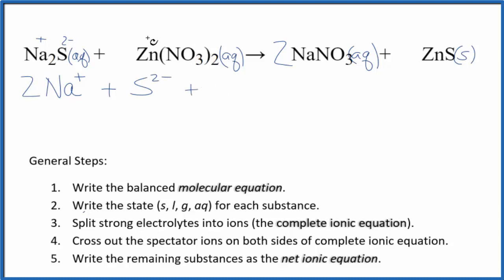plus the 1 sulfide ion. Zinc is always 2 plus. So we're going to call this Zn2 plus. And then the nitrate, that's always 1 minus. We have 2 of them. So plus 2 of these nitrate ions. And those are the reactants in our net ionic equation.